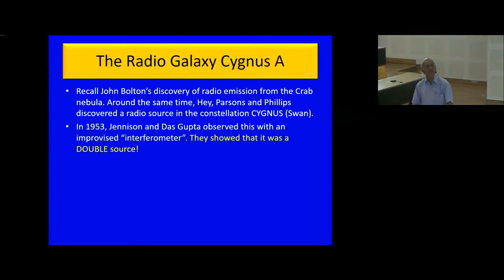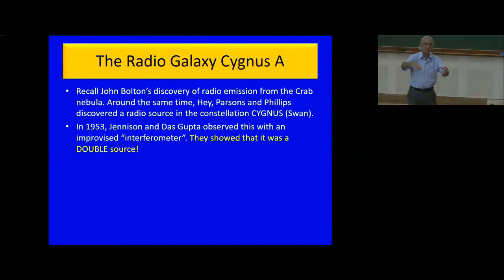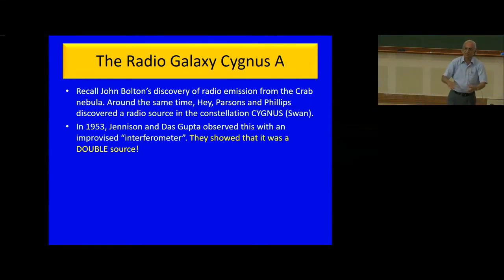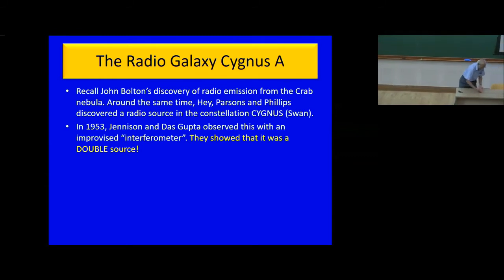Around 1953, Jenison and Das Gupta, students of Hanbury Brown, used an improvised interferometer in Manchester — one radio telescope in Manchester, the other in a jeep driven around at different spacings, with chart recorders later spread and correlated. They found a correlation of intensities. This method raises an interesting quantum mechanics question: in a double-slit experiment, detecting which slit a photon goes through destroys interference. Yet in a radio interferometer, you detect intensities, amplify the signal, correlate the intensities, and produce fringes. Is this not a violation of Heisenberg's uncertainty principle?